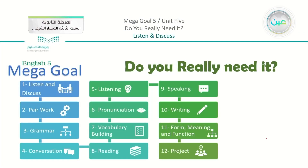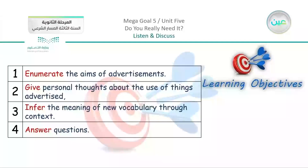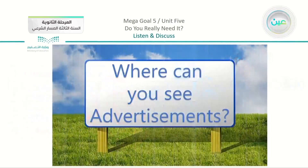We have the first lesson, which is the listen and discuss lesson. As usual, we are going to start by seeing our objectives. Objective one: to enumerate the aims of advertisements. Objective two: to give personal thoughts about the use of things advertised. Objective three: to infer the meaning of new vocabulary through context. And objective four: to answer questions.